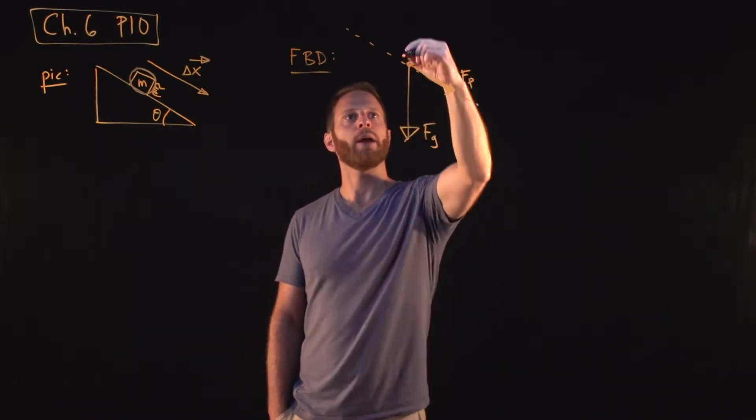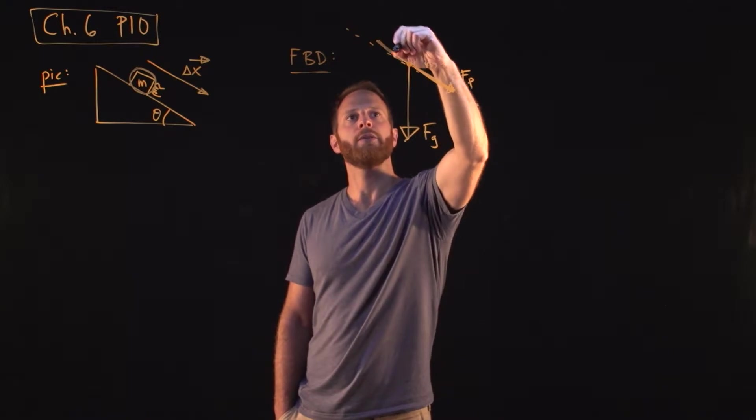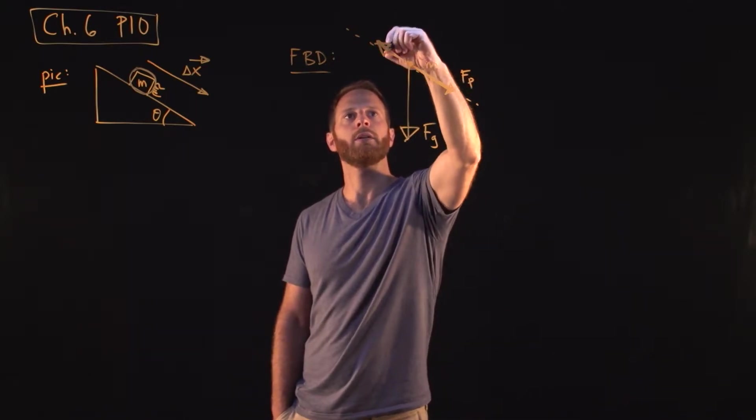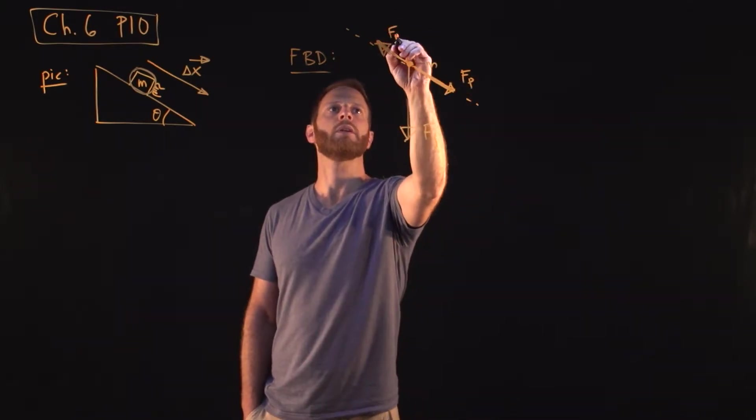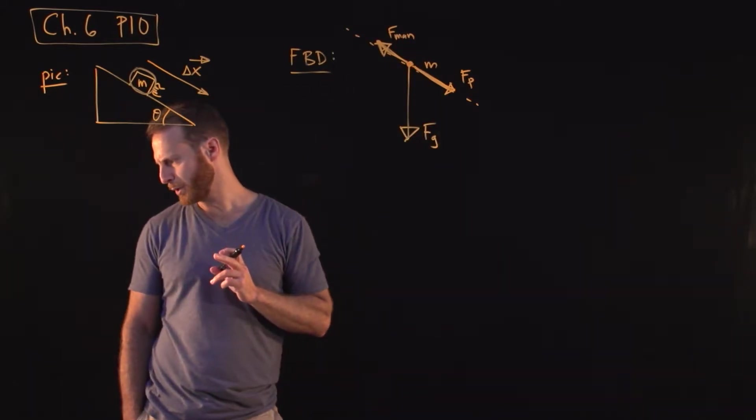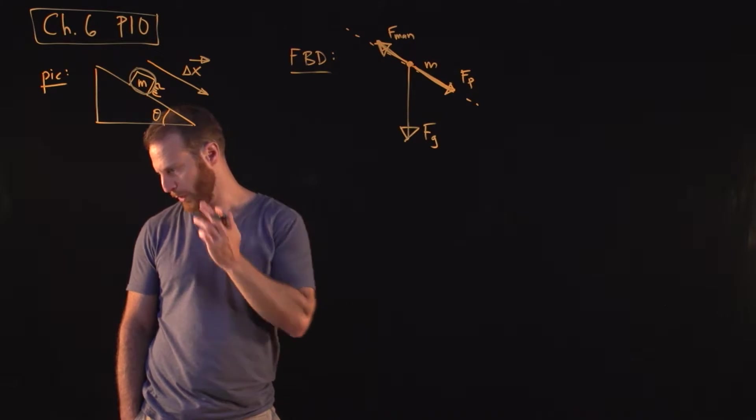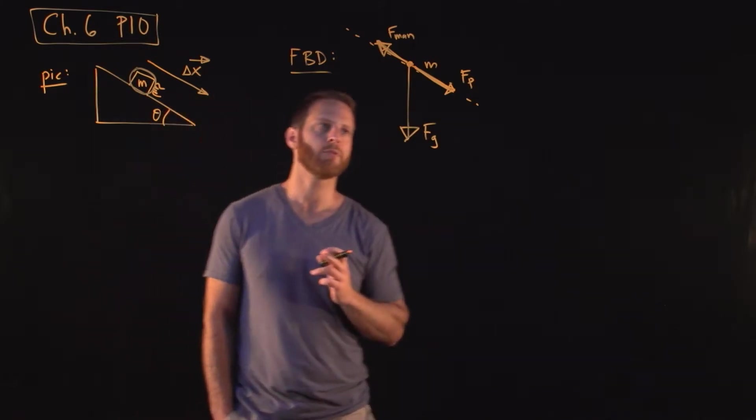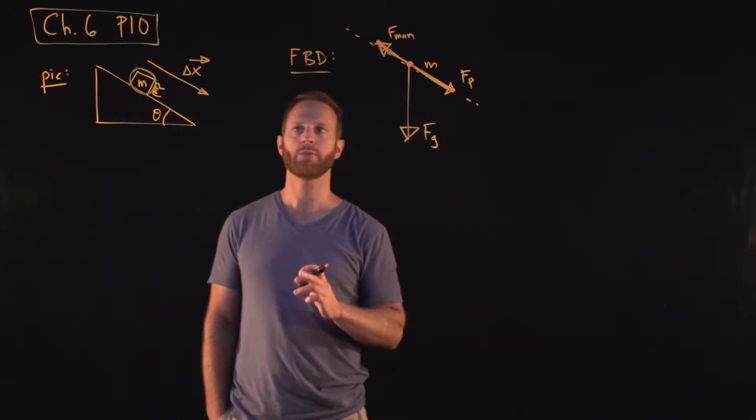And then pointing up the ramp, that's the direction that the man is pushing, so we'll call this Fman. And I believe they tell us there is no friction to worry about, or at least we assume it, because there is no other information given about the coefficient of friction.